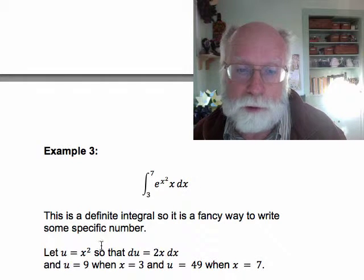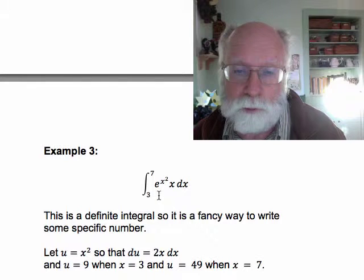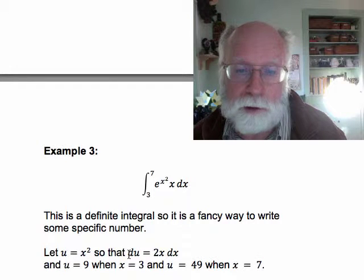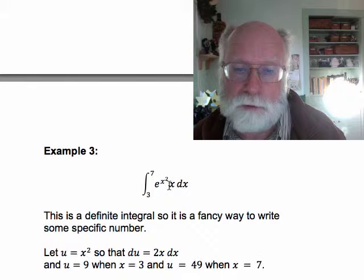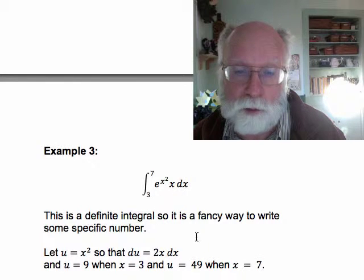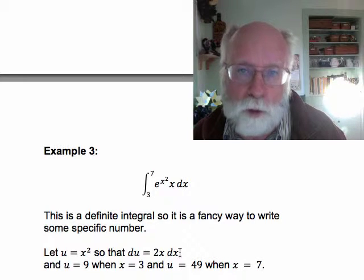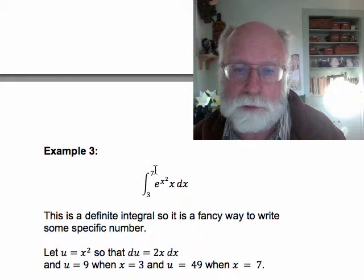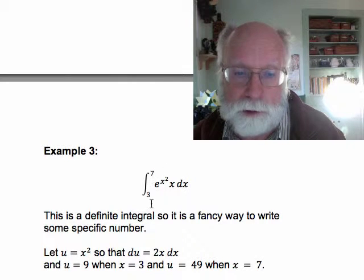So here we can let u equal x squared and that will make e to the x squared into e to the u, so it'll be a simple exponential function. Du will then be 2x dx and we have the x dx there, so this whole integral is going to simplify. Before we go ahead with that though we have to attend to these limits on the integral, the 3 and the 7.